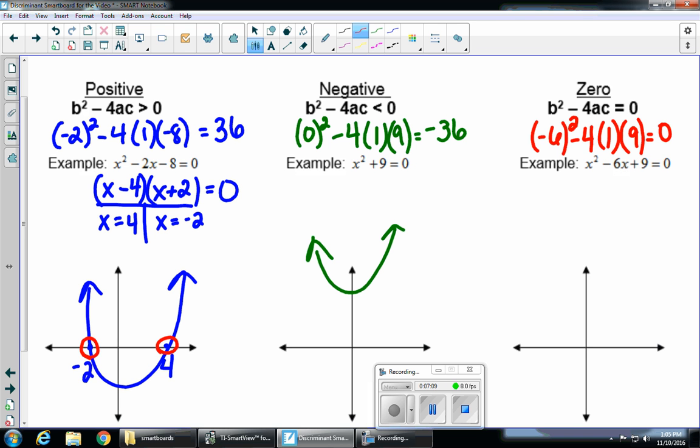And if we look at our equation, x squared minus 6x plus 9, this is factorable. I get x and x, I get two negatives, and they're both going to be x minus 3.